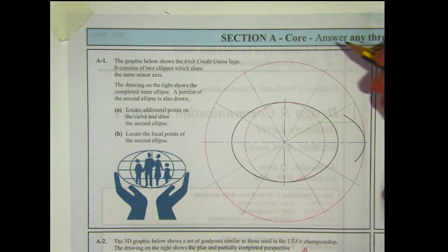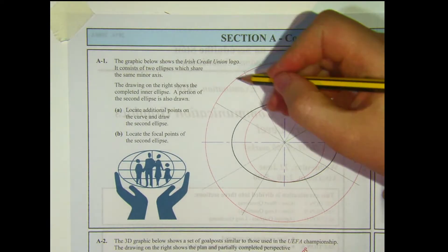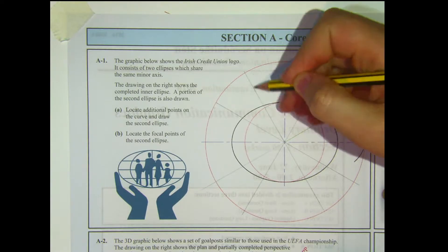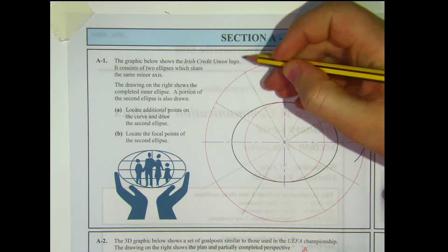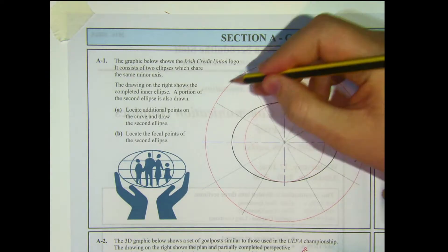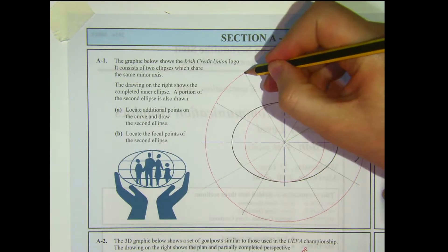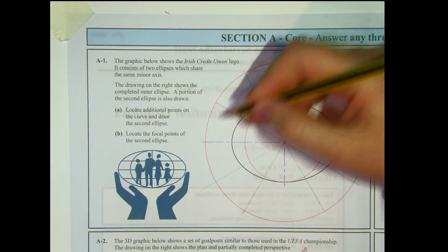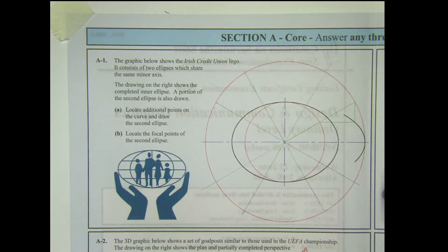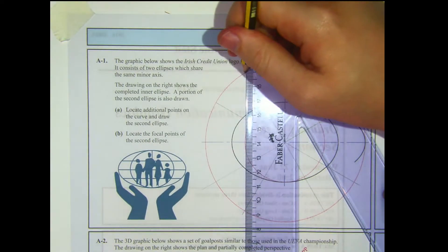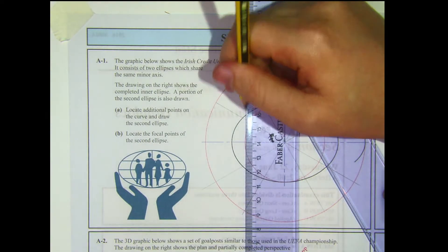Once we have that done, we're going to take each line in turn. Starting with this line up here — this line cuts the major auxiliary circle, so the big circle, at this point. I'm going to go perpendicular to the major axis from that point. This is the major axis, and perpendicular to that is this line down here.